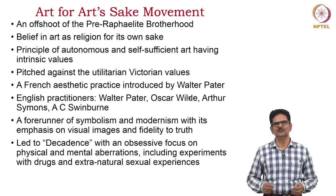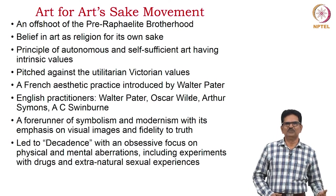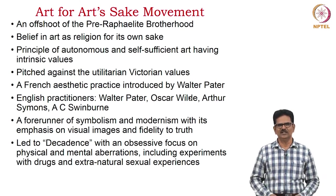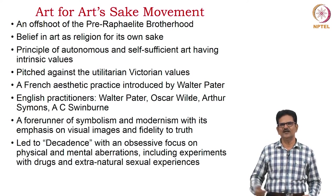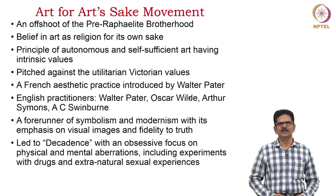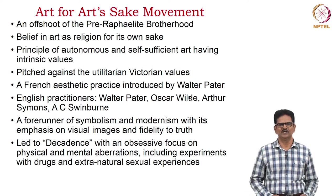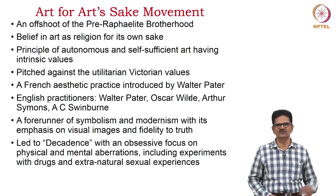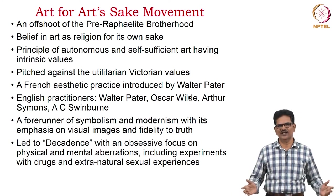Next, we pay attention to the movement called Art for Art's Sake. This is an offshoot of the Pre-Raphaelite Brotherhood. They believed in art as religion for its own sake. They had the principle of autonomous and self-sufficient art having intrinsic values. They pitched against the utilitarian values of the Victorian period. This was originally a French aesthetic practice, introduced into England by Walter Pater. English practitioners include Pater, Oscar Wilde, Arthur Symons, and A.C. Swinburne. This movement is a forerunner of symbolism and modernism, with its emphasis on visual images and fidelity to truth. It finally led to decadence with an obsessive focus on physical and mental aberrations, including experiments with drugs and extra-natural sexual experiences.